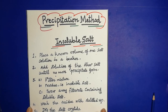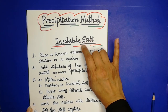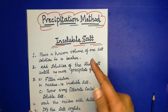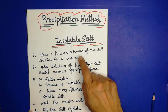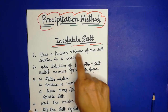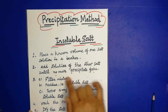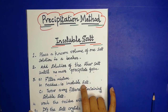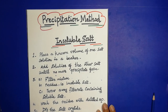The next method is used to prepare an insoluble salt. The first two methods were for soluble salts. For an insoluble salt, there is only one method: take a known volume of one salt solution in a beaker, add the solution of the other salt until no more precipitate forms, filter the mixture — the residue is the insoluble salt — throw away the filtrate, wash the residue with distilled water, and dry the salt crystals.